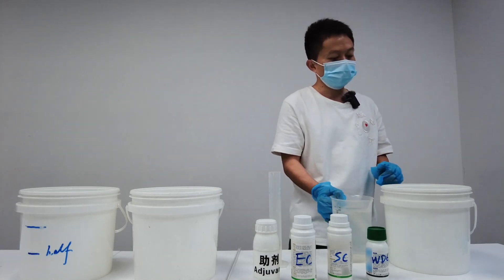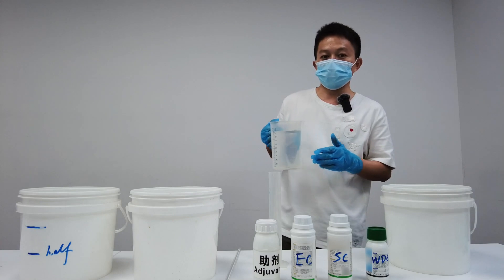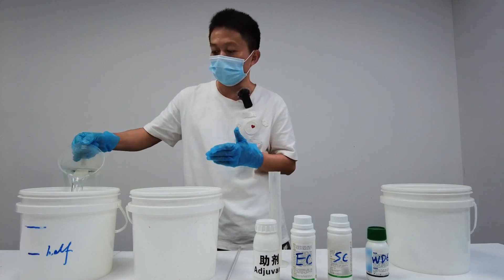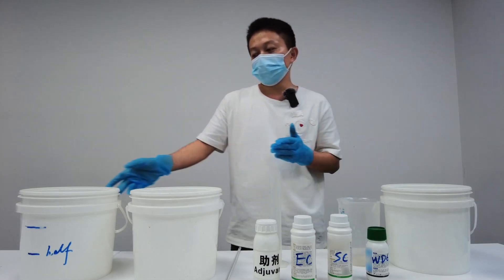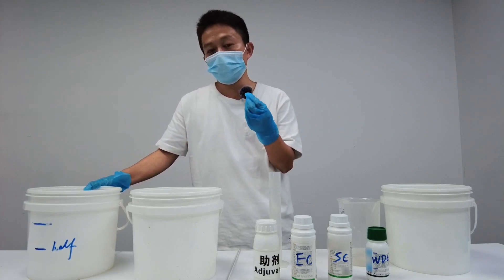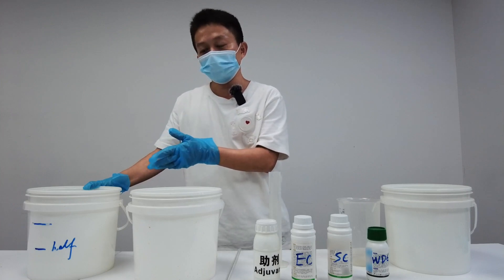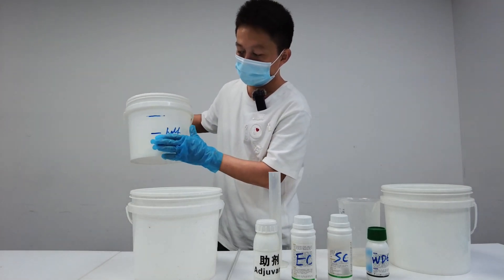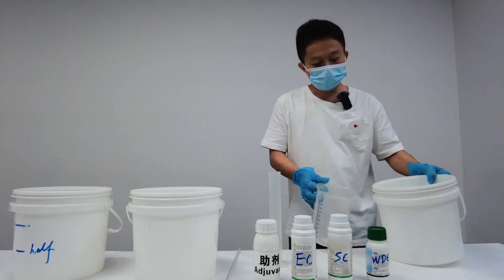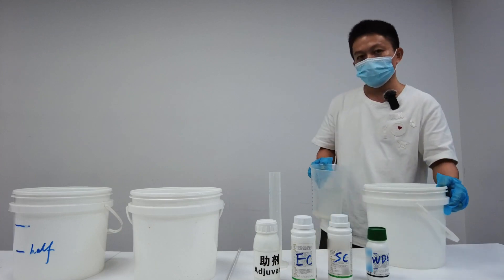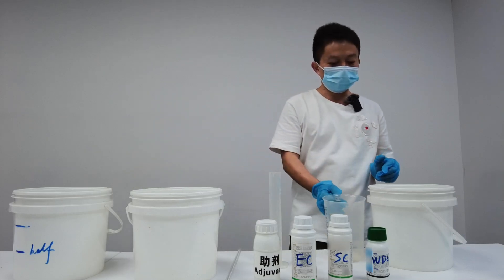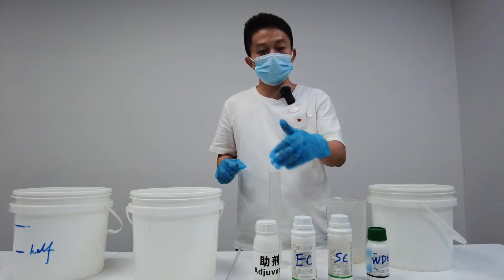The next step is to add some water to the final bucket — this is the bucket we will use for the chemical mixture. We add about half the required amount of water first. We also add some water to the mother liquid tank, which we will use to pre-dissolve the chemicals one by one.